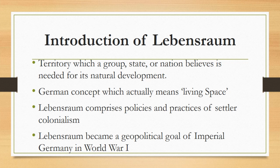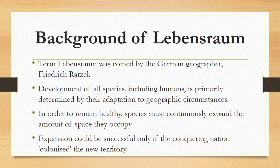The most extreme form of this ideology was supported by the Nazi Party and Nazi Germany until the end of World War II. The term Lebensraum was coined by the German geographer Frederick Ratzel during the last two decades of the 19th century. Ratzel developed a theory according to which the development of all species, including humans, is primarily determined by their adaptation to geographic circumstances. Above all, Ratzel considered species migration as the crucial factor in social adaptation and cultural change.